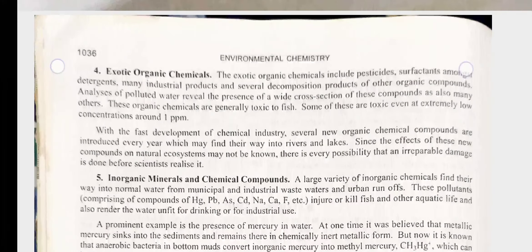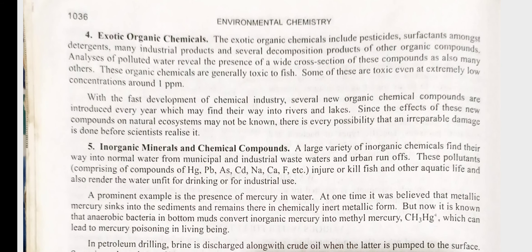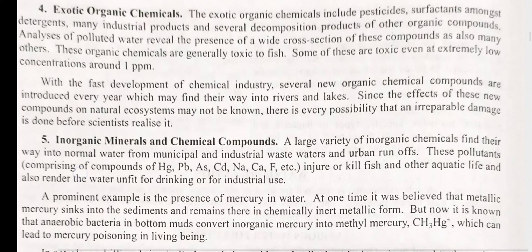Category 4: Exotic organic chemicals. These include pesticides, surfactants, detergents, many industrial products and several decomposition products of other organic compounds. Analysis of polluted water reveals the presence of a wide cross-section of these compounds. These organic chemicals are generally toxic to fish — some are toxic even at extremely low concentrations around 1 ppm. With fast development of chemical industries, several new organic compounds are introduced every year which may find their way into rivers and lakes. Since the effect of these new compounds on natural ecosystems may not be known, there is every possibility that irreparable damage is done before scientists realize it.